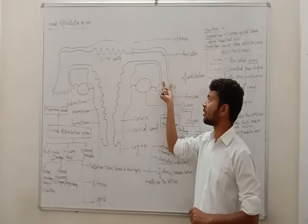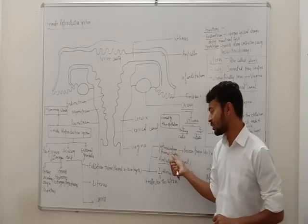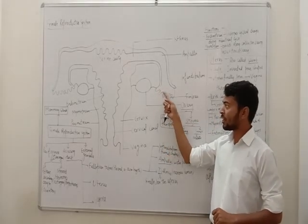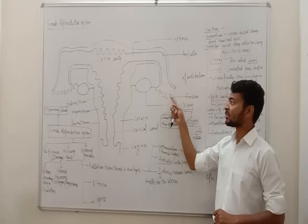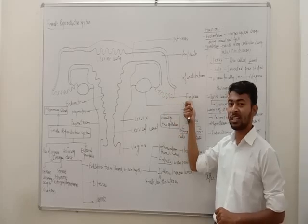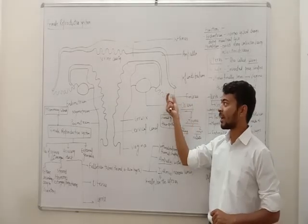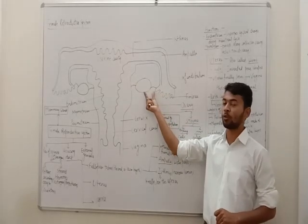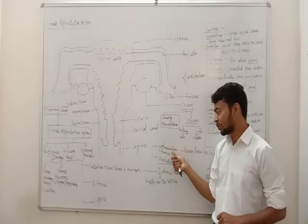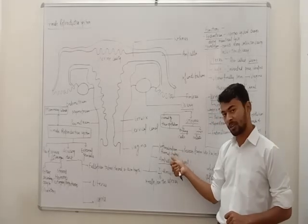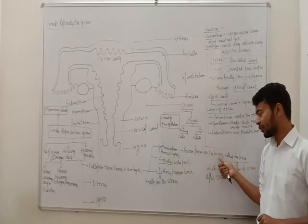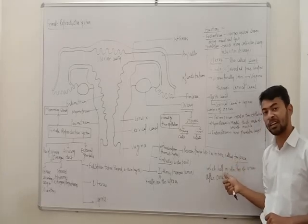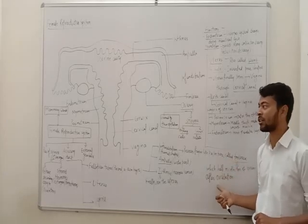The infundibulum is a funnel-shaped structure which also possesses finger-like projections. These finger-like projections are known as fimbriae. The fimbriae help in the collection of the ovum just after ovulation from the ovary.